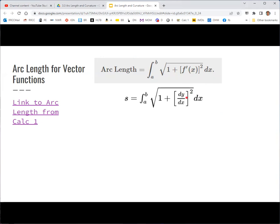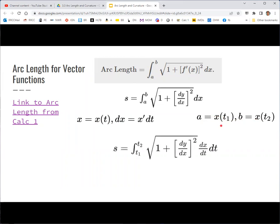If we replace f prime with dy/dx and think of this arc length as some scalar s, we get this version of that same formula. If we switch to parameterization, where x is a function of t, our parameter, then the differential dx would be equal to x prime dt, just by using the chain rule.